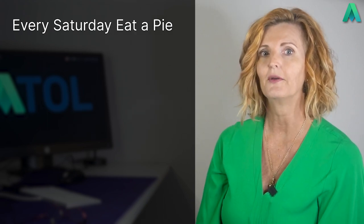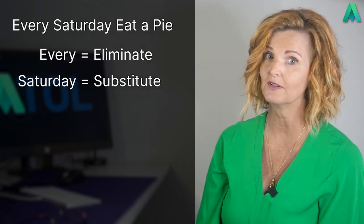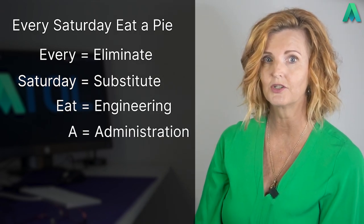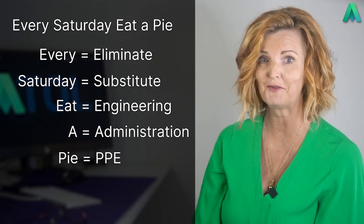And that is the entire clause. So that leaves us with breaking these down and understanding what each of them mean and how they work together. I remember this hierarchy by using this little saying in my head: every Saturday, eat a pie. So every is eliminate, Saturday is substitute — you could use Sunday too — eat is engineering, A is administration, and pie is PPE. Try it and see if it works for you.